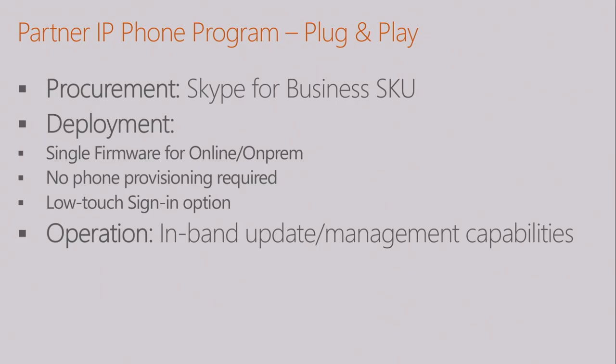Plug-and-play breaks into three principles. First, procurement: those phones today have a SKU specifically for Skype for Business. So if you go to buy a Yealink T48G, you buy it with a specific SKU and that phone comes with the Skype for Business framework preinstalled. Second, deployment: there is a single framework for both online and on-premises. You have either an on-prem server deployment or an online deployment, and many organizations have hybrid. The same framework works for both.